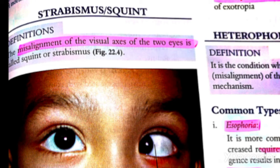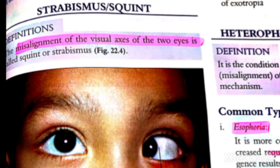Assalamualaikum. We will now cover the introduction of all the concepts we have taken. You should know everything about the relevant anatomy — the muscles of the movements, the nerves of the muscles and how they work. Next, we will learn about the squint.